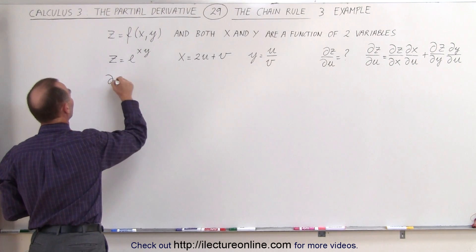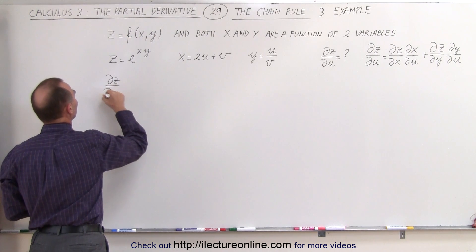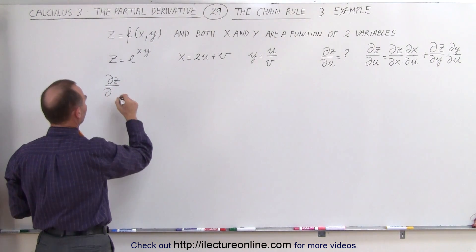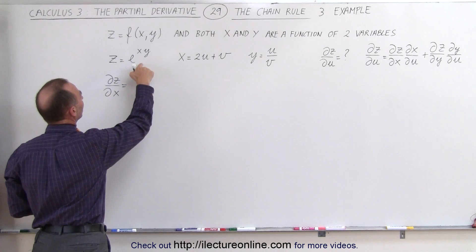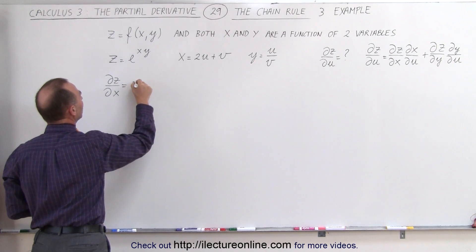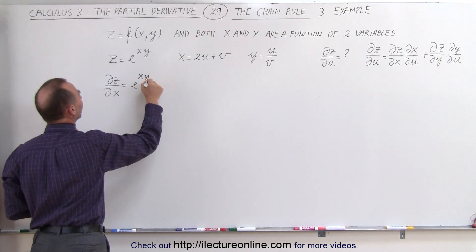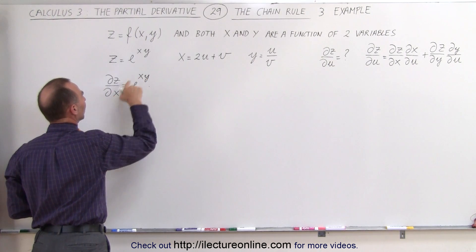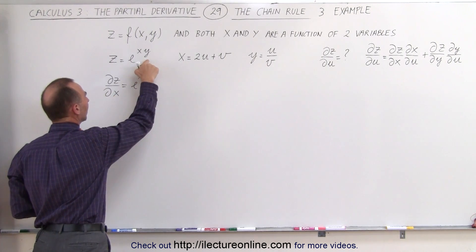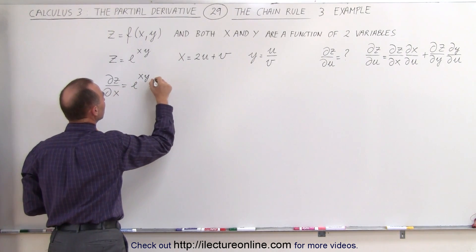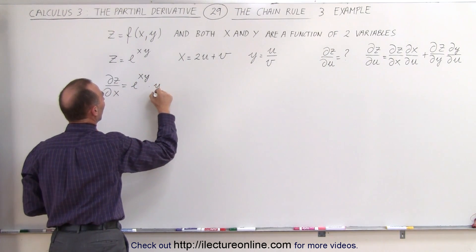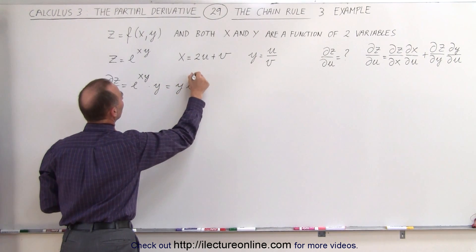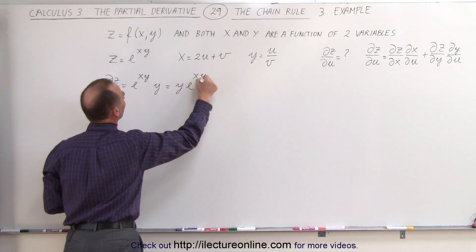The partial of z with respect to x: this is equal to e to the x times y, times the derivative of the exponent. Since y is a constant here, that gives us times y, so we can write this as y·e^(xy).